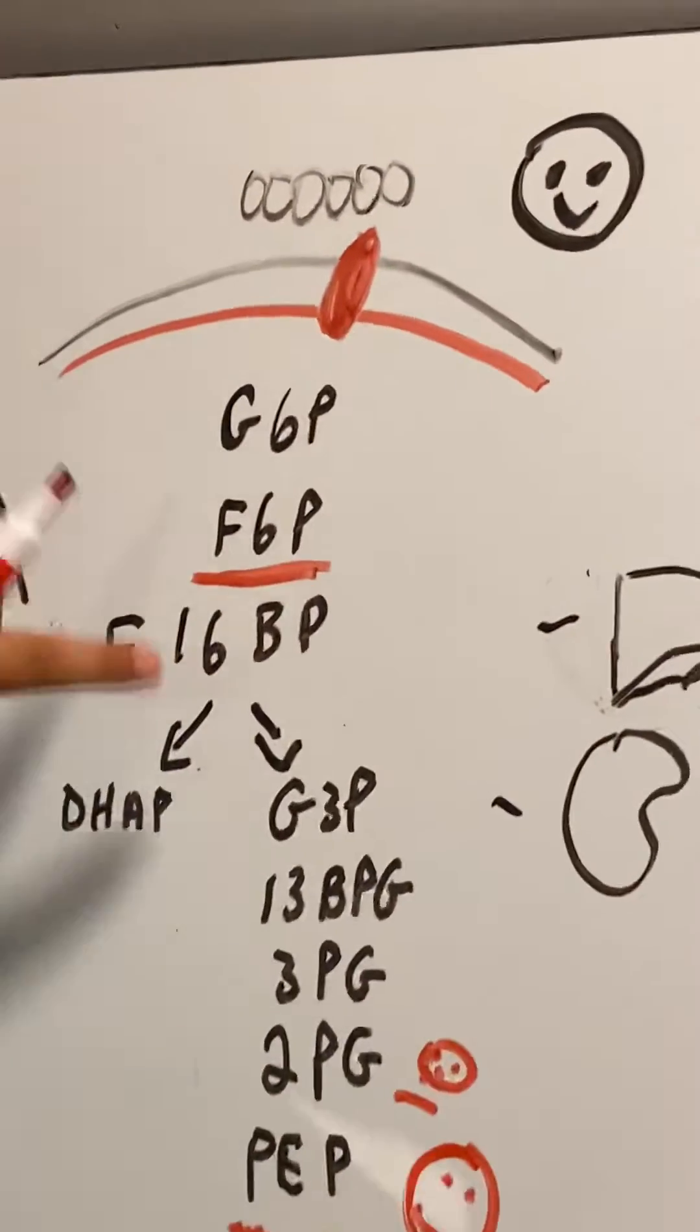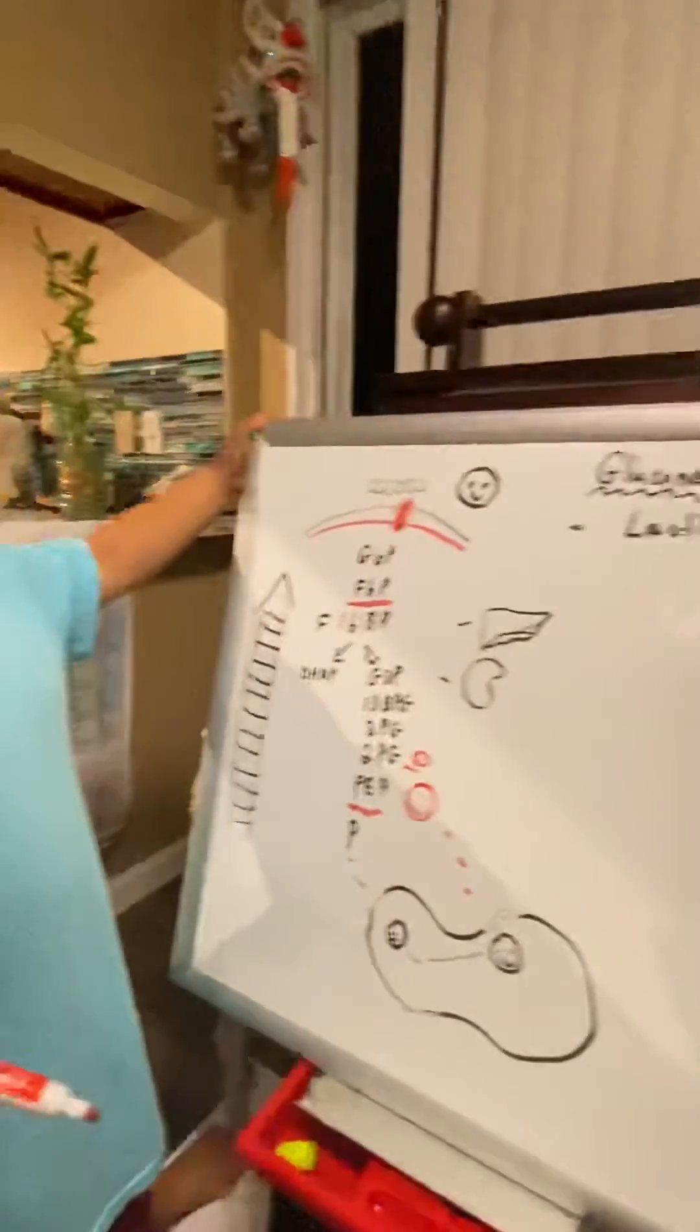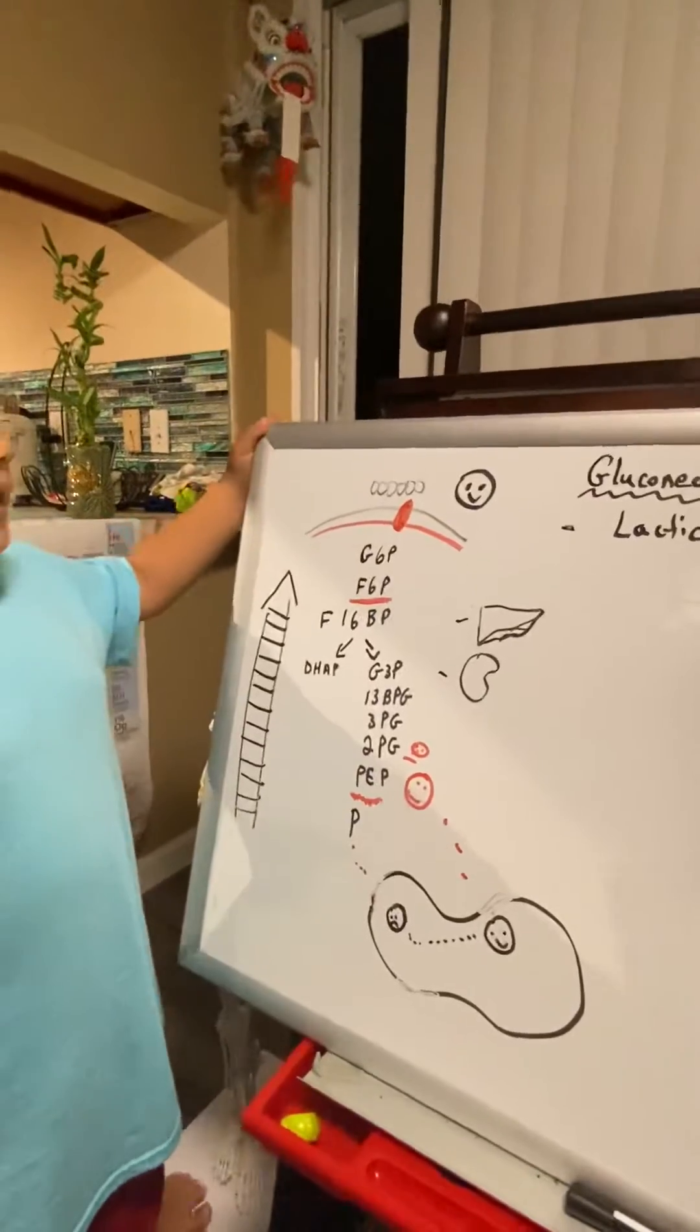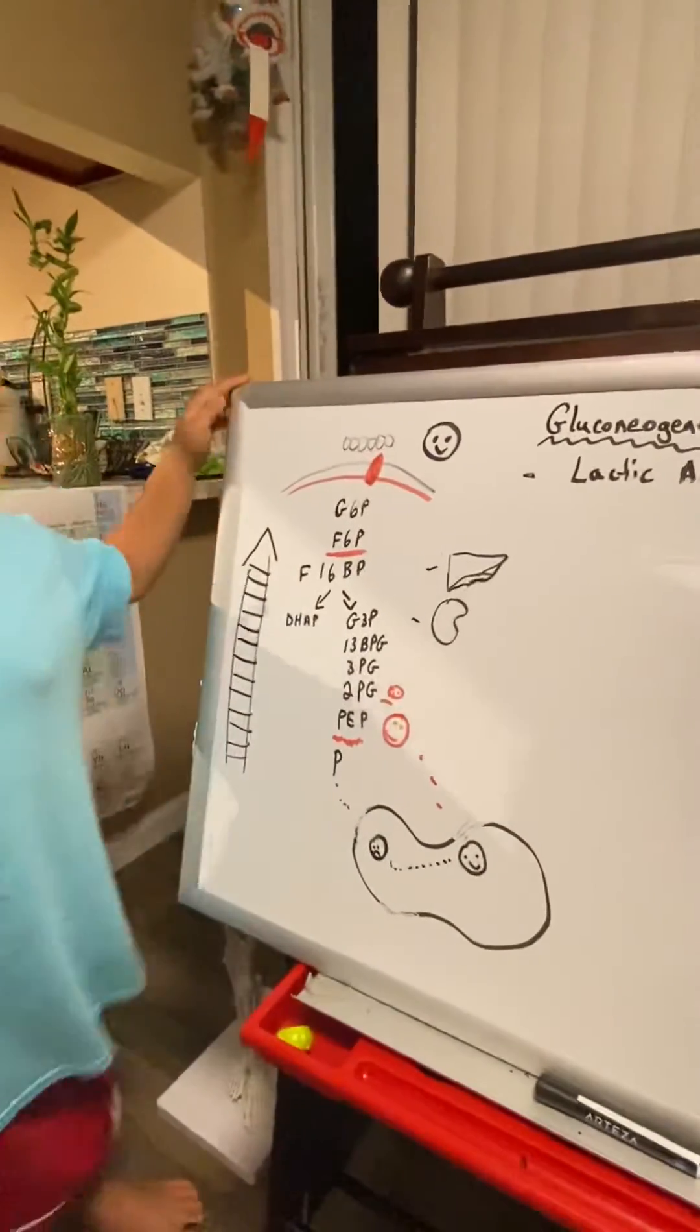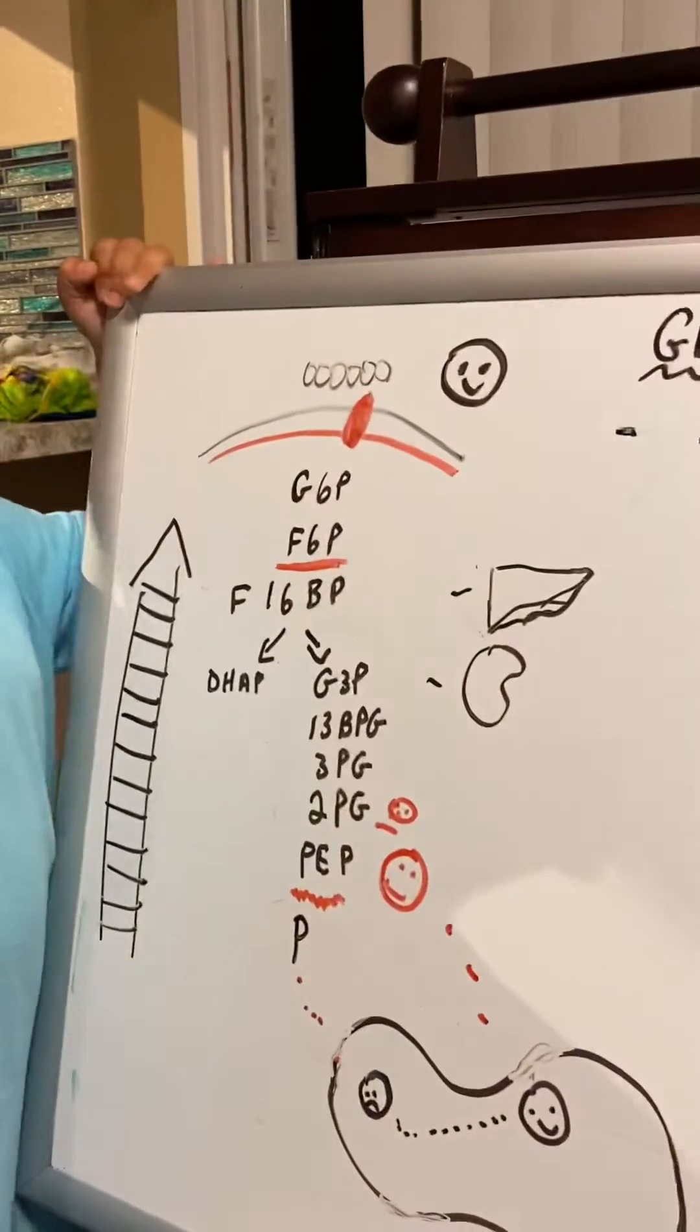The stop sign is called fructose 1,6-bisphosphatase. It becomes glucose 6-phosphate, but it can't go to glucose, there's a stop sign. So see this? That's awesome. It's called glucose 6-phosphatase, kids.